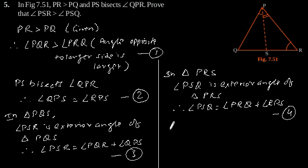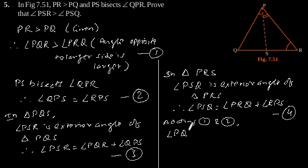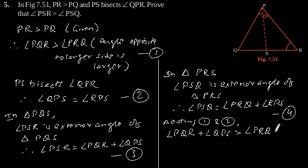Now adding equations one and two, we get that angle PQR plus angle QPS is greater than angle PRQ plus angle RPS. Now using equations three and four, this implies angle PSR is greater than angle PSQ.